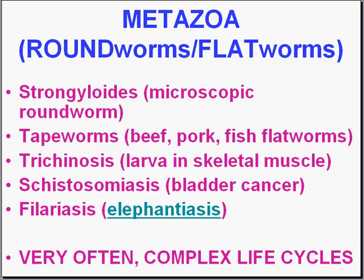In the places where schistosomiasis is rampant, the bladder responds to the infection by undergoing metaplasia — specifically squamous metaplasia, not transitional or glandular metaplasia. That squamous metaplasia can then give rise to, or be the soil for, the development of squamous cell cancer of the bladder. So even though you don't see it in the United States, probably the vast majority of squamous cell carcinomas of the bladder arose in the setting of a previous schistosome infection.